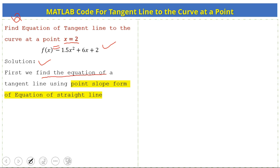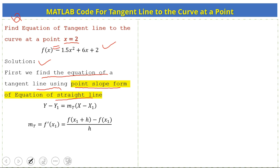First we find the equation of a tangent line using the point-slope form of the equation of a straight line, and then we write the MATLAB code on the same pattern. The point-slope form is y - y1 = m(x - x1), where the slope m of the tangent line equals the derivative of the function at x1, which is f(x1 + h) - f(x1) divided by h.